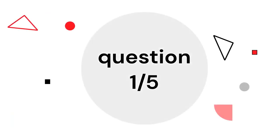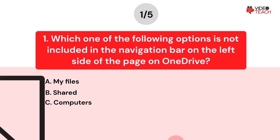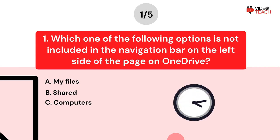Question number one. Which one of the following options is not included in the navigation bar on the left side of the page on OneDrive? Option A: My files. Option B: Shared. Option C: Computers. Now you have about 15 seconds to think about your answer.